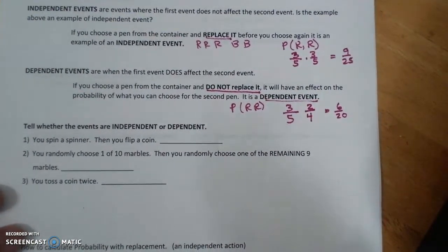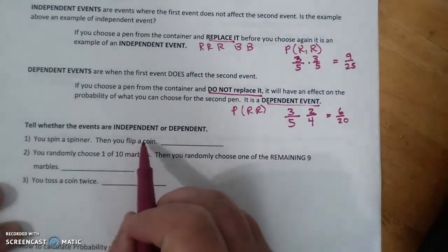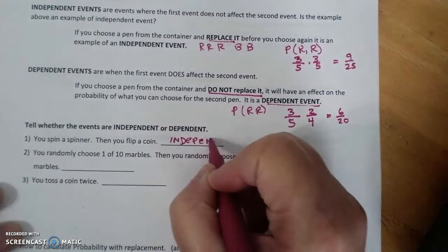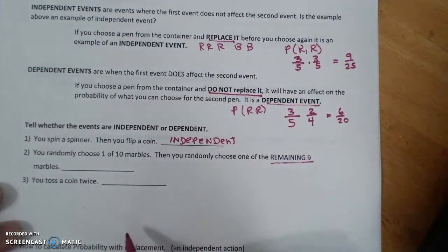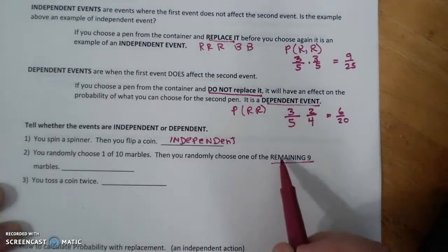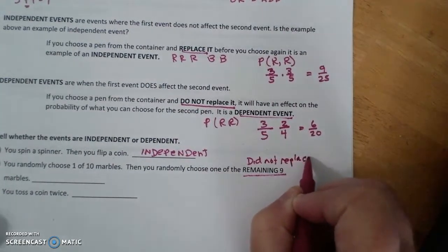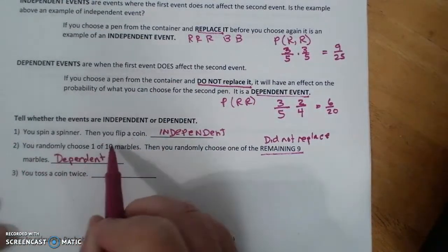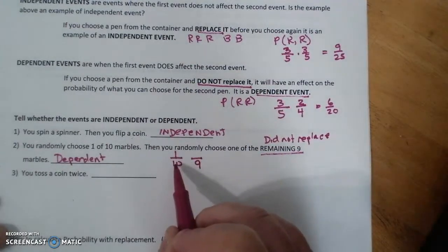They are different, and one is an independent probability, one is a dependent probability. Your job is to classify them. One of your jobs is to classify probability events as either independent or dependent, so let's try. You spin a spinner, you flip a coin. Does flipping a coin have anything to do with spinning a spinner? No, so it is independent. You randomly choose one of 10 marbles, then you randomly choose one of the remaining 9 marbles. That remaining 9 means did not replace, and that is a huge tip-off to be dependent, because on your first one you had the choice of 10. On the second one you only had 9, and this is affected by you doing this event.